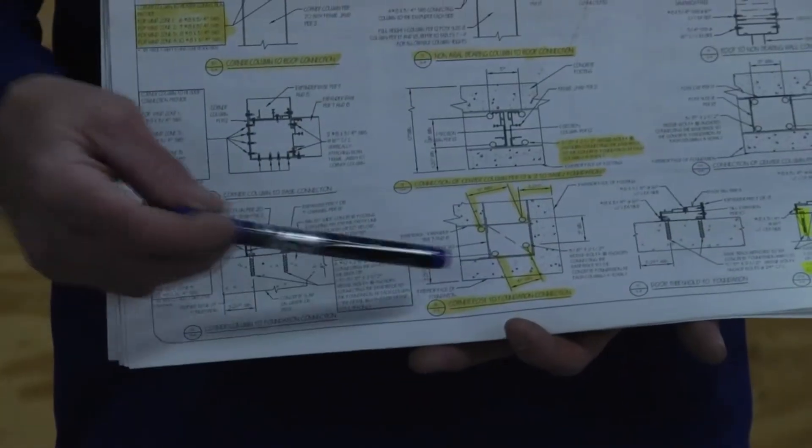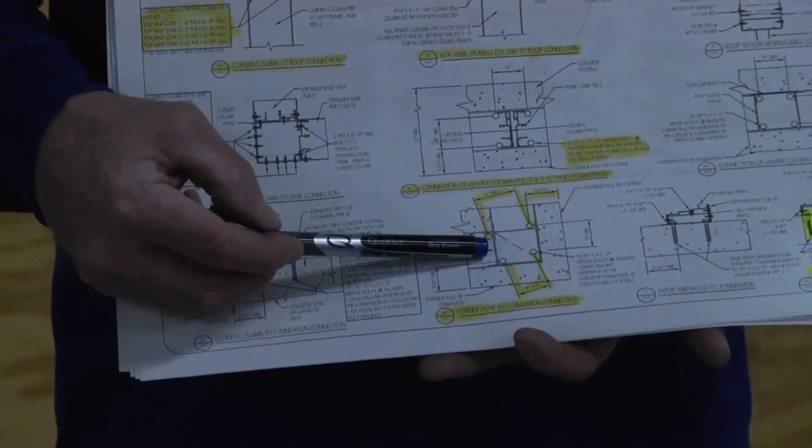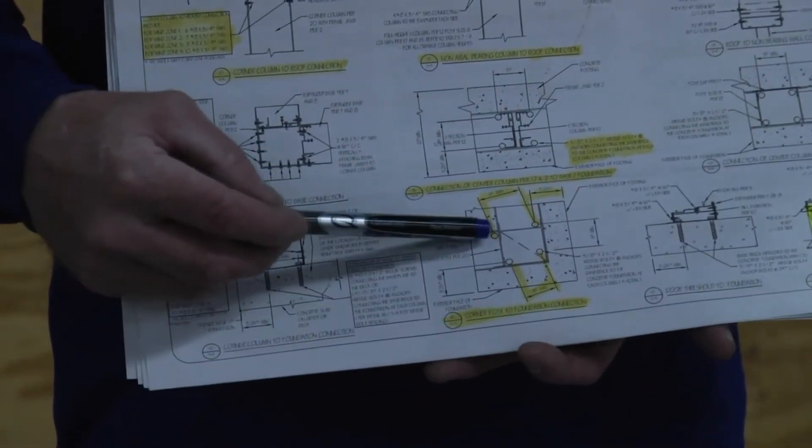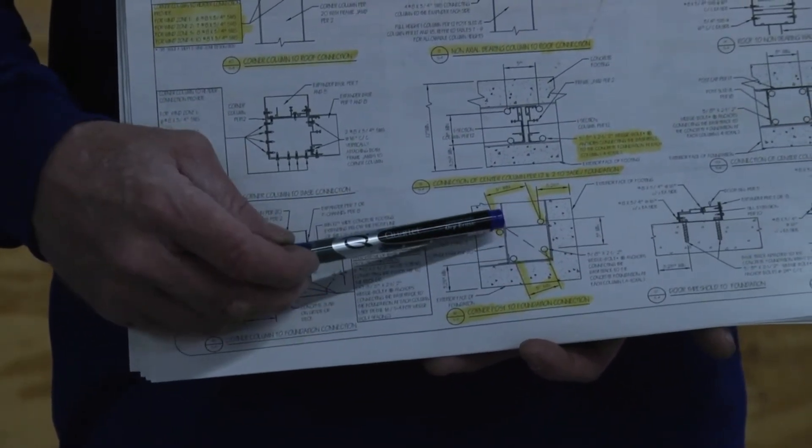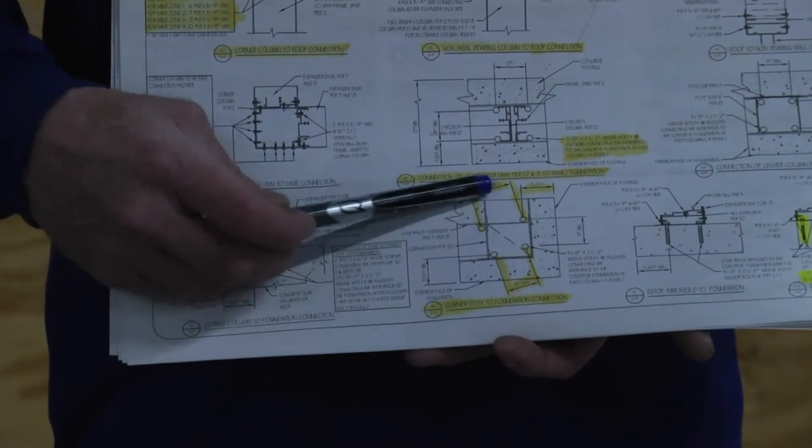Here on the engineering, it shows our bolt pattern for the corners. We have four fasteners placed in the corner, spaced three inches apart.